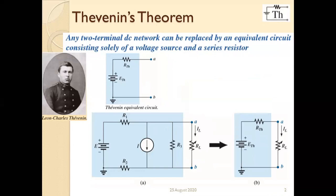Bismillahirrahmanirrahim. I'm going to repeat the Thevenin theorem and then we will go for the problems, then it will be easy to understand. The Thevenin theorem: any two-terminal DC network can be replaced by an equivalent circuit consisting of a voltage source and a series resistor. For example, this network can be replaced by a network having just a voltage source and a series resistor. That voltage source is called ETH and that resistance is RTH, which are the Thevenin equivalent voltage and resistor.